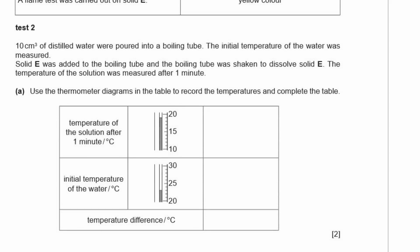Test two. Ten centimeters cubed of distilled water were poured into a boiling tube. The initial temperature of the water was measured. Then solid E was added to the boiling tube and the boiling tube was shaken to dissolve solid E. The temperature of the solution was measured after one minute. A used the thermometer diagrams in the table to record the temperatures and complete the table. Alright, so let's just do it, the initial and then final. So the initial temperature, it started at 20, 21, 22, 23 degrees Celsius. 23. Okay, and here the final temperature, it was 19 degrees Celsius. So the difference between 19 and 23, it doesn't need a plus or a minus, it is 4 degrees Celsius. But, if you notice, the temperature has gone down. It went from 23 to 19.